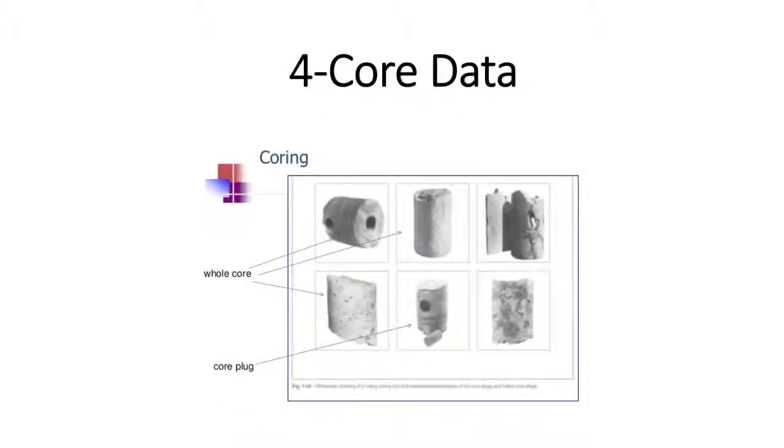Core data can be obtained from reservoir rock. In the laboratory, plugs can be taken from these cores and then some analysis can be operated on them such as routine core analysis, or RCA, to find rock properties such as porosity and permeability, or SCAL to measure capillary pressures and relative permeability data.